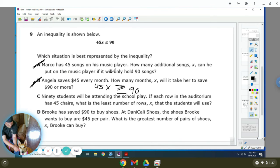90 students will be attending the school play. If each row in the auditorium has 45 chairs, what's the least number of rows that the students will use? So 45X is less than or equal to 90. Actually, it's going to be greater than or equal to 90. Brooke has saved $90 to buy shoes at Danny Cowell Shoes. The shoes Brooke wants to buy are $45 per pair. What's the greatest number of pairs she can buy? So their 45X is less than or equal to 90. This answer is D.